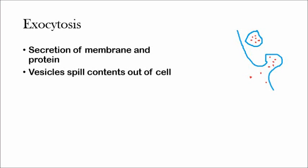The first type of bulk transport is called exocytosis. As the name suggests, exo meaning out of, this type of bulk transport transports materials out of the cell.